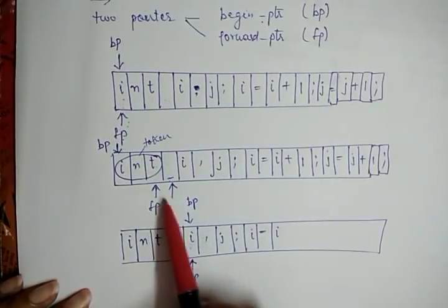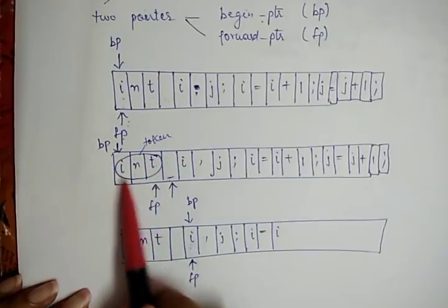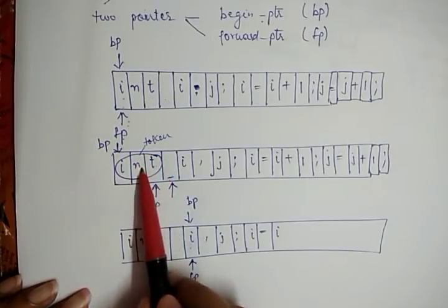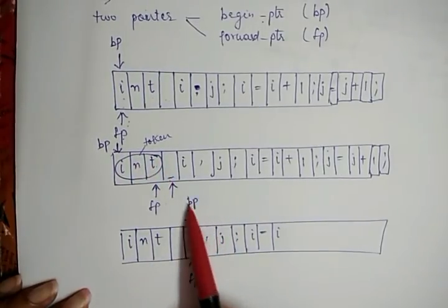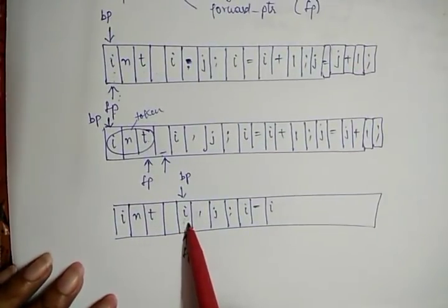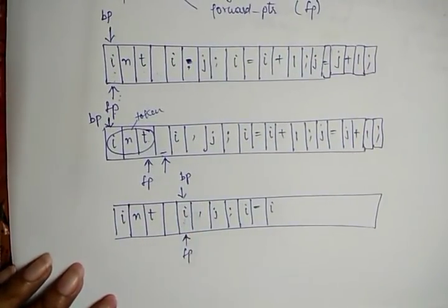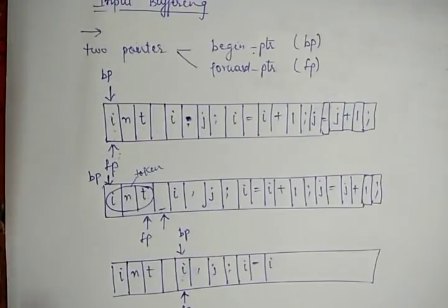When the forward pointer moves ahead and encounters a whitespace, it means it has encountered one token. Then the begin pointer moves to the position where the forward pointer is pointing. This is how the input buffer works, or how the lexical analyzer reads characters from left to right.